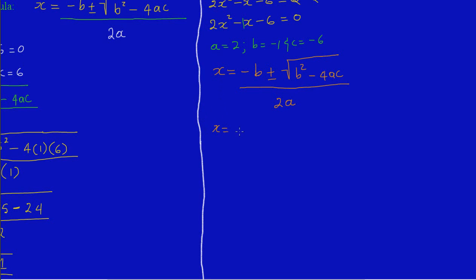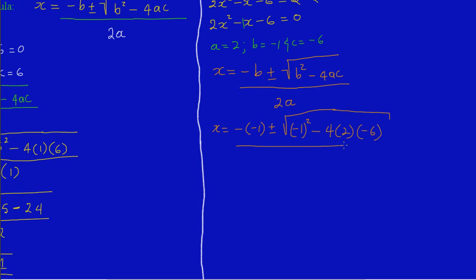So x is equal to — remember there's a negative sign in front of the b — so I have to put back my negative sign. However, b is negative 1, so I'm going to open a bracket and put in the value of b, which is negative 1, close bracket, plus or minus the square root of b squared. B was negative 1, so we put that in a bracket and square it, minus 4 times a — the value of a is 2 — times c, and the value of c is negative 6. All of this is over 2 times a, which is 2, so 2 times 2.